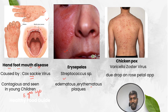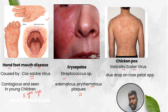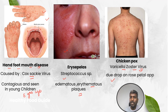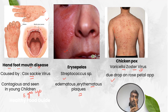Number three is chickenpox — very common but very important for the main exam. It is caused by varicella-zoster virus and has a dew drop on rose petal appearance. The examiner will typically show an image of the trunk with lesions because palms and soles are actually spared in chickenpox.